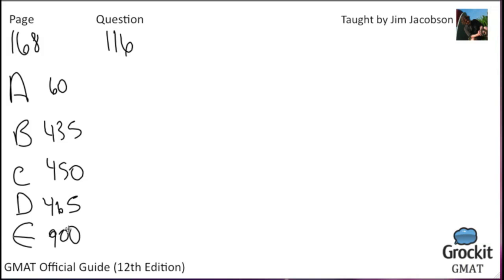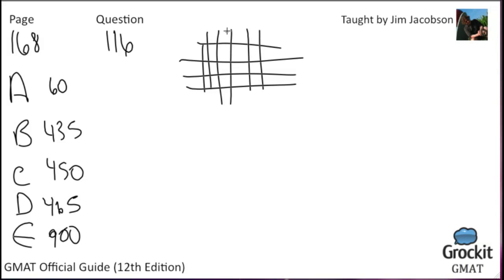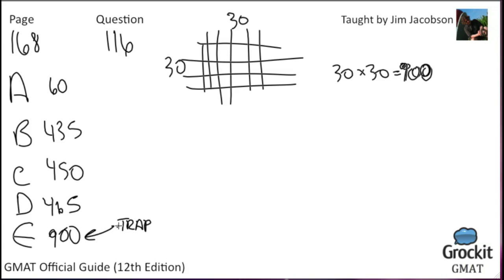The whole thing will be a 30 by 30 grid: 30 times 30 equals 900. But 900 is the trap answer. We haven't accounted for the rest of the problem. First, we subtract the 30 blocks where each city's distance to itself would appear (city A to A, B to B, etc.) — those don't count. 900 minus 30 equals 870.